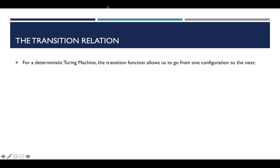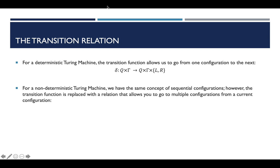For a deterministic Turing machine, we have this delta that takes a state and an alphabet symbol and gives you a potentially new state, a potentially new alphabet symbol, and a movement of the read-write head either left or to the right. For a non-deterministic machine, we have the exact same concept and the concept of sequential configurations. However, we have a much more interesting situation where the output of any step or any rule in the transition relation is actually some subset of the Cartesian product of these things — the set of all possible configurations that are in the range of this function.